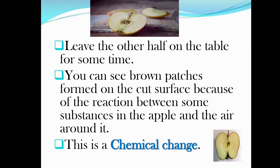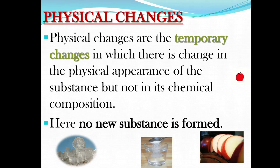Leave the other half on the table for some time. You can see brown patches formed on the cut surface because of the reaction between some substances in the apple and the air around it. This is a chemical change — the brown patches are formed due to a reaction between substances in the apple and the surrounding air.